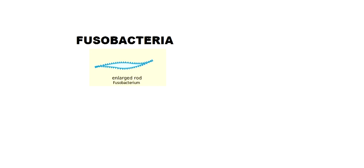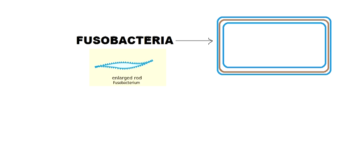Let's start with the shape of Fusobacteria. Fusobacteria generally have an enlarged rod type of shape, as you can see in this image. They are gram-negative bacteria, so they have an outer structure with two cell membranes and one cell wall in between.